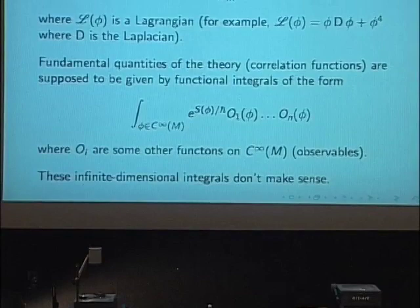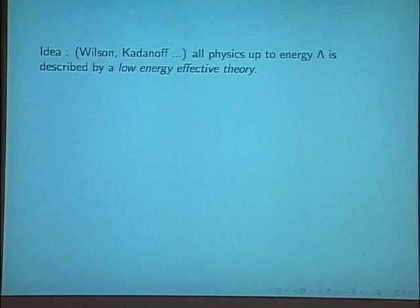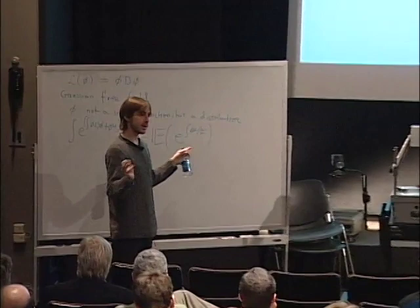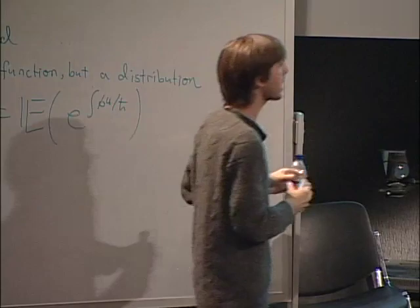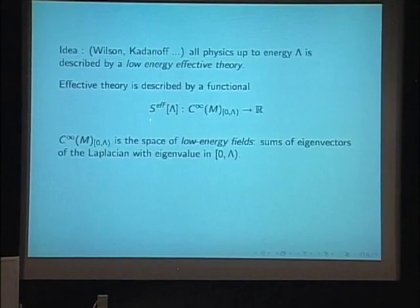Physicists try to make sense of these things, and this is what my talk will be about. There is a very nice idea which I think hasn't percolated as far as it should into the mathematics literature — a really beautiful and fundamental idea from Wilson, Kadanoff, and others about the effective action. The idea is that we don't really know what happens at very high energies. Everything occurs at some low energy, and processes at low energy — up to energy lambda — are described by a low energy effective field theory.